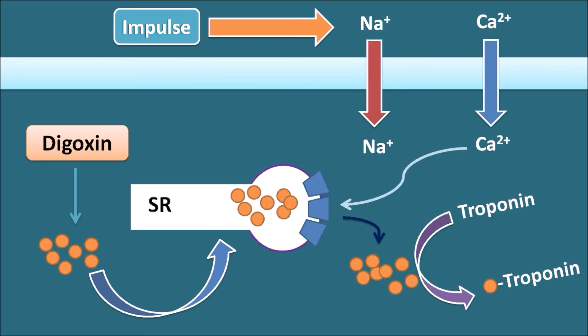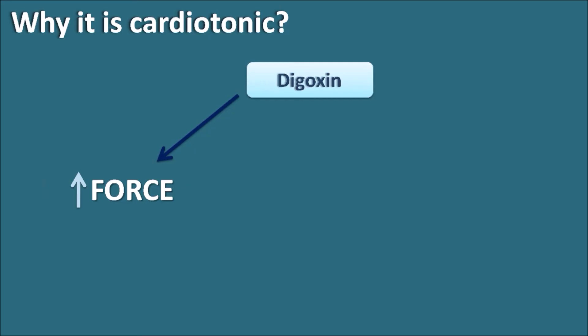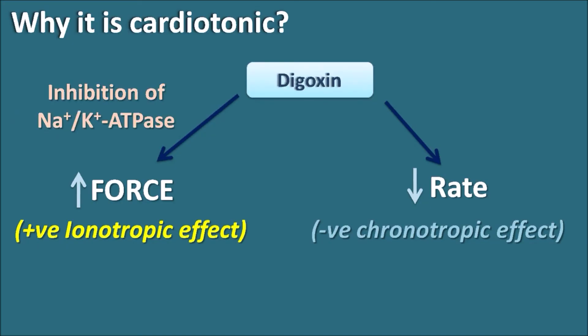Digoxin increases the force of contraction of the heart. But why is it called a cardiotonic? Digoxin increases the force of contraction but at the same time decreases the rate of contraction — that is why it is called a cardiotonic. Increasing the force of contraction is called a positive inotropic effect, and decreasing the rate of contraction is called a negative chronotropic effect. The increase in force of contraction is due to inhibition of the sodium-potassium ATPase pump, which raises intracellular calcium levels.